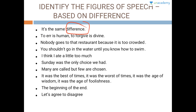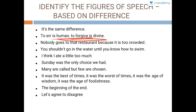To err is human, to forgive is divine — this is an example of antithesis because you can see the opposites: erring is human and forgiving is divine, contrasting the two.